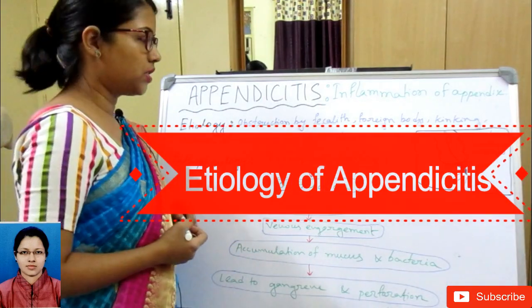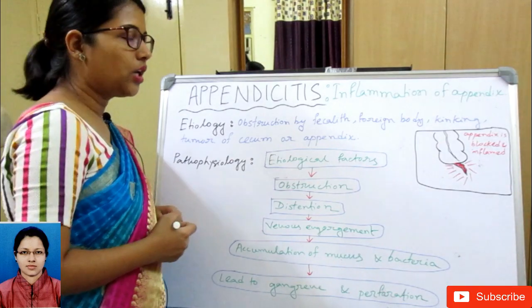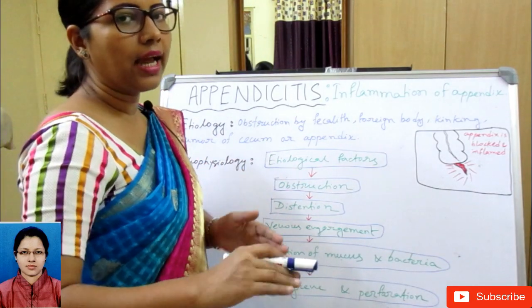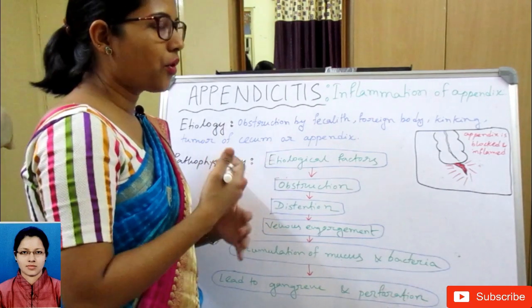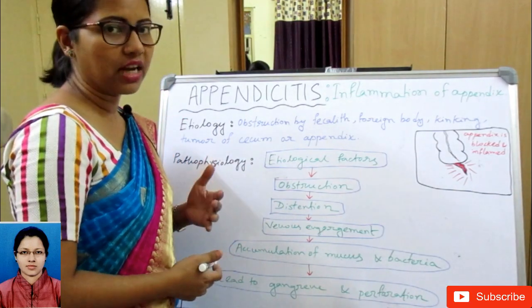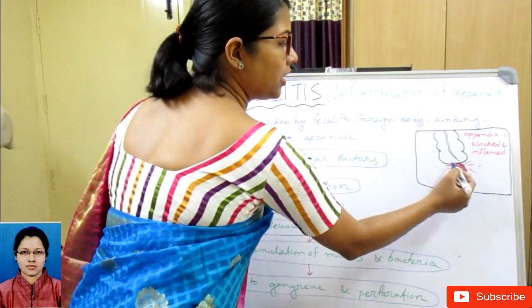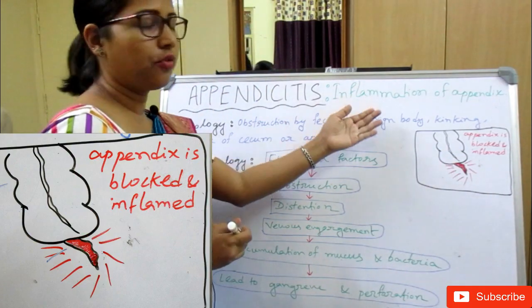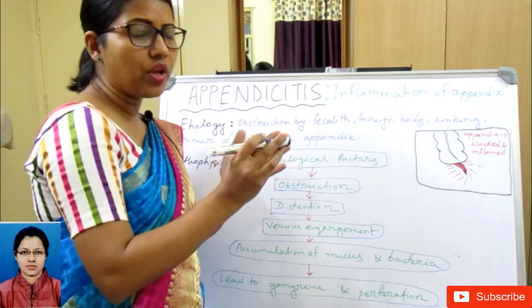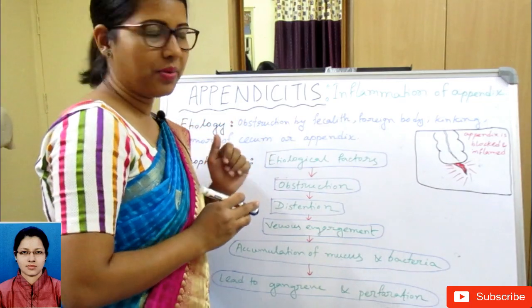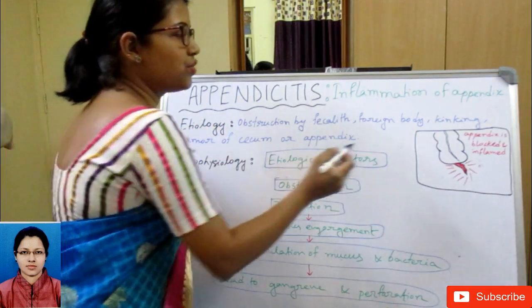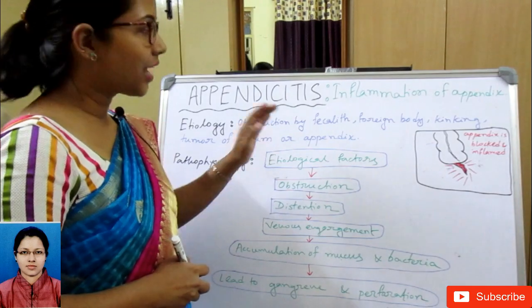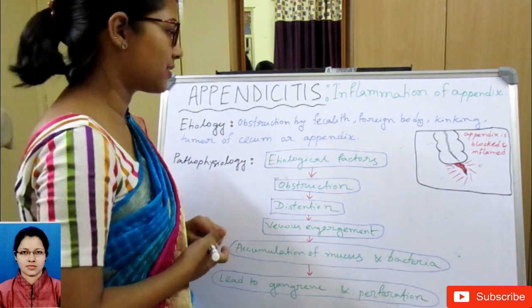The etiological factors include obstruction by fecal matter. As food material passes through the small intestine into the large intestine, fecal matter formation begins, and obstruction can occur in the appendix due to fecal material. Other causes include presence of a foreign body, kinking, narrowing of the appendix, or a tumor of the cecum or appendix. These are the etiological factors that can lead to appendicitis.